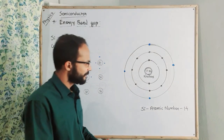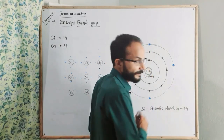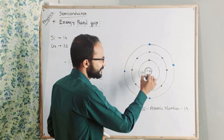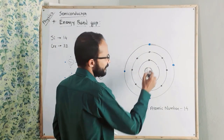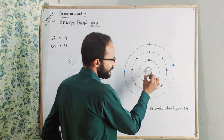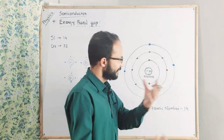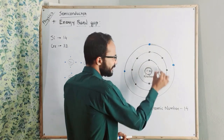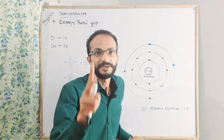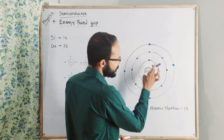Let me give you an example of the silicon atom. The atomic number of silicon is 14. I have drawn the atomic structure and atomic model here. This is our nucleus, consisting of protons and neutrons. The first orbit — how many electrons will it consist? Two electrons. I have drawn two electrons here.